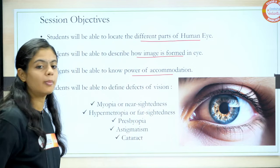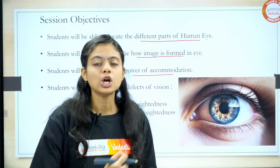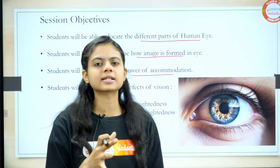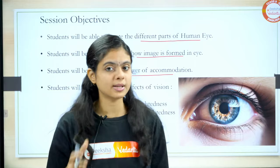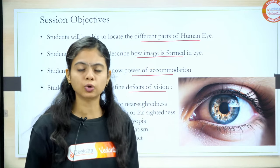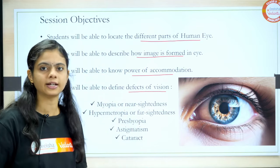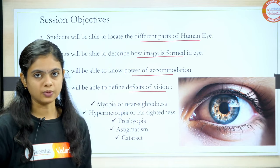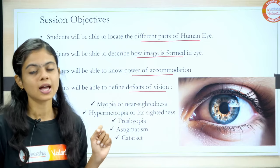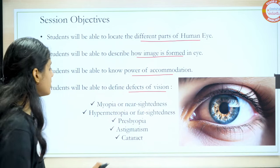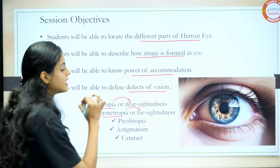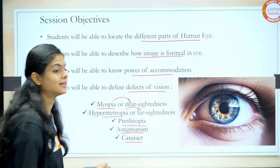The next topic is power of accommodation — the strength of our human eye to make things visible whether they are at far distance or near. Moving forward, there are defects of vision. What are the defects? Why are they caused? How to correct these defects? These things will all be covered in today's session. The defects are: myopia (nearsightedness), hypermetrophia (farsightedness), presbyopia, astigmatism, and cataract — five defects in total.